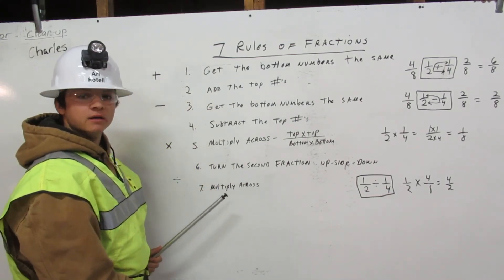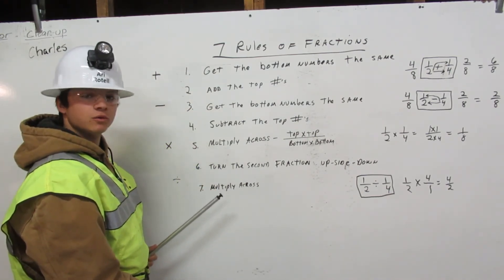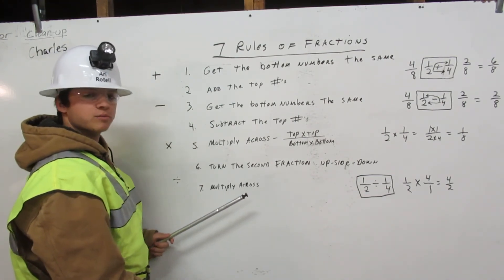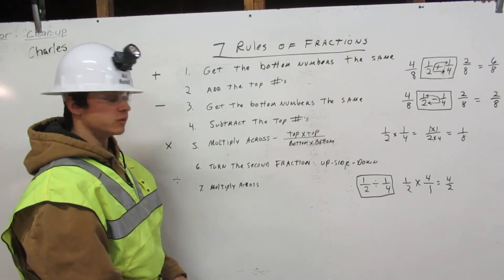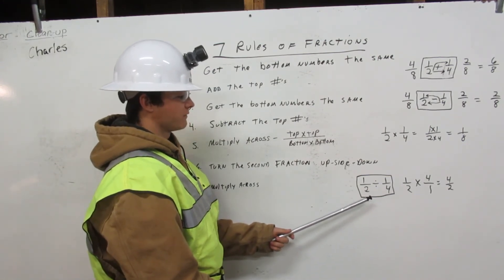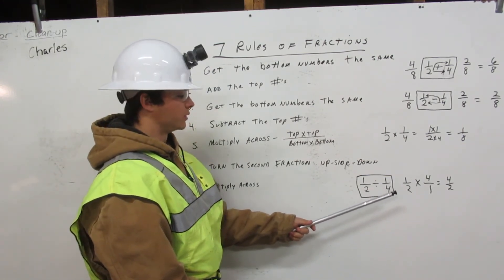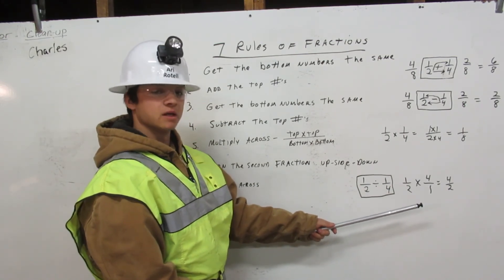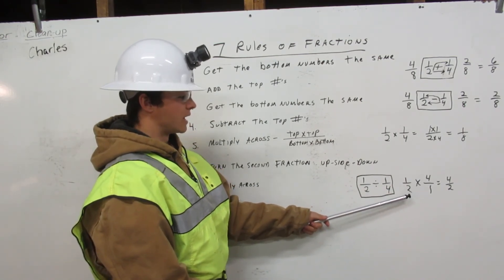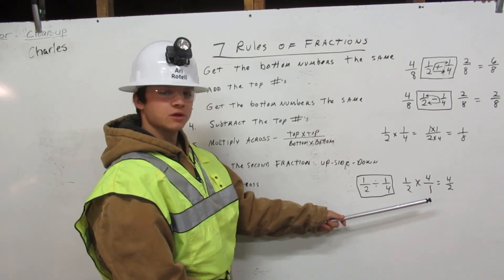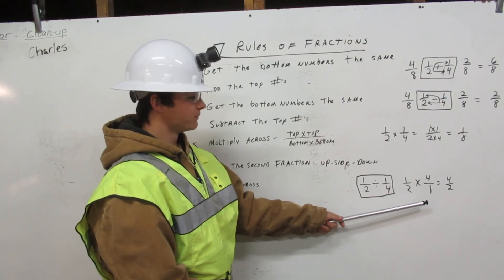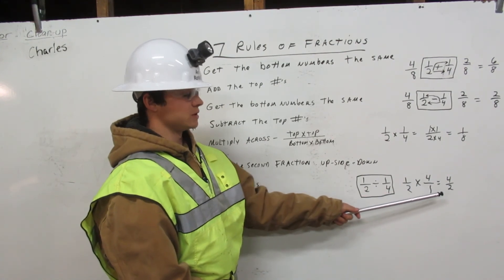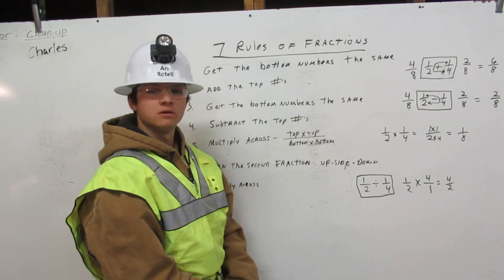Next, divide fractions. There are two rules: turn the second fraction upside down and multiply across. Here's an example: one half divided by one quarter. We put a box around it to explain that we have flipped the second number. One half times four over one, which has already been flipped. One times four is four, two times one is two — four over two. That is how you divide all fractions.